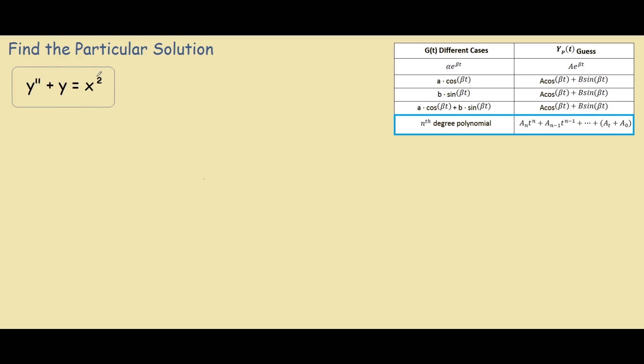So we begin by looking at this term over here, the x squared. This is what we call the g of t, or in this case the g of x, and we look at the different cases. Normally we have a table of all the different cases.